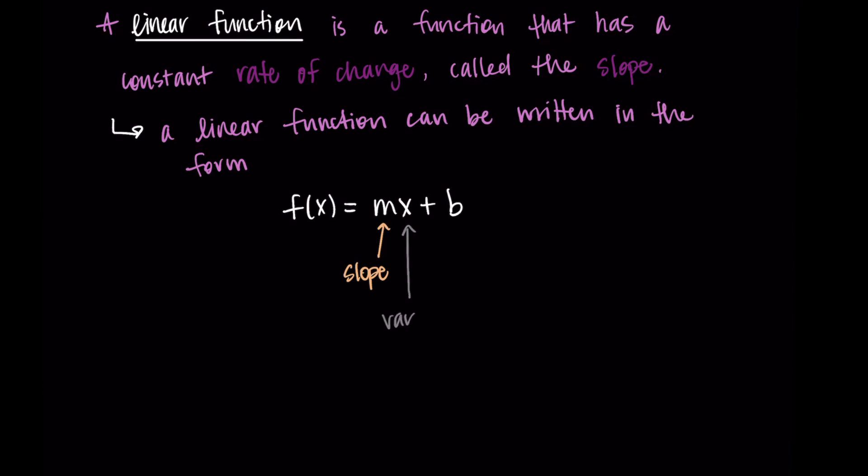Then x is our variable or whatever is the input to the function. So we have the function f(x). It takes x as the input. And this is what happens to the input. It gets multiplied by m and then it gets b added to it.